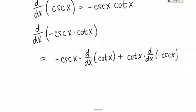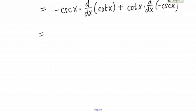Let's actually calculate these derivatives. We've got negative cosecant X times the derivative of cotangent. The derivative of cotangent is negative cosecant squared.